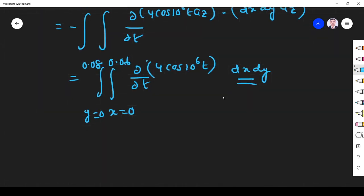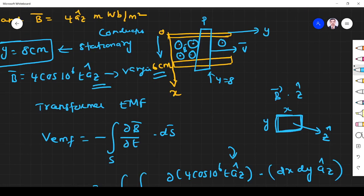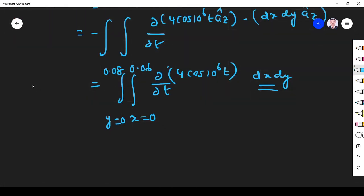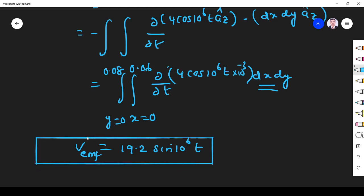If you simplify this, you get 4 times 10... B is 4 cos 10^6 t milliweber, so milli means we include 10^-3 here. Times 10^-3. Now if you integrate and simplify it, what you get is 19.2 sin 10^6 t. That's the V_EMF. This is transformer EMF.